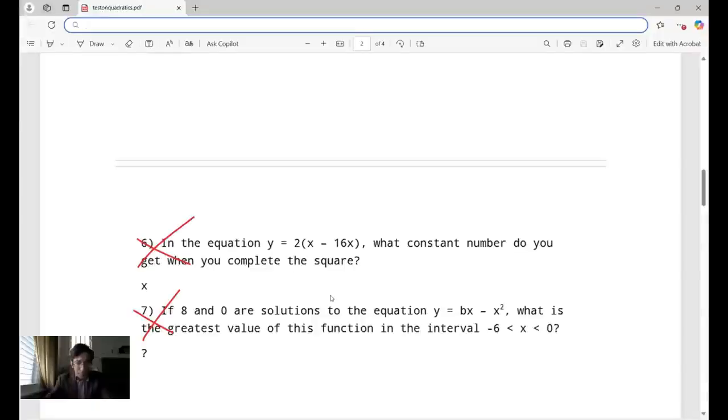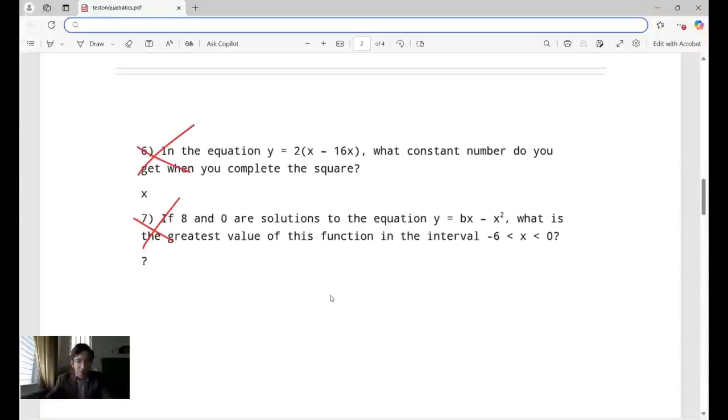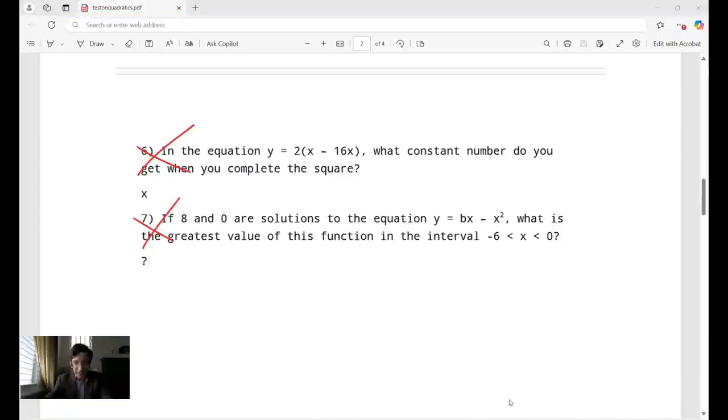Next part, number seven, also wrong. If 8 and 0 are solutions to the equation y = BX - X², what is the greatest value of this function in the interval -6 < X < 0? Student wrote a question mark. Fair enough. Never be afraid to ask if you don't know. I'd rather a student write I don't know. We're going to figure it out. We're going to discover it.